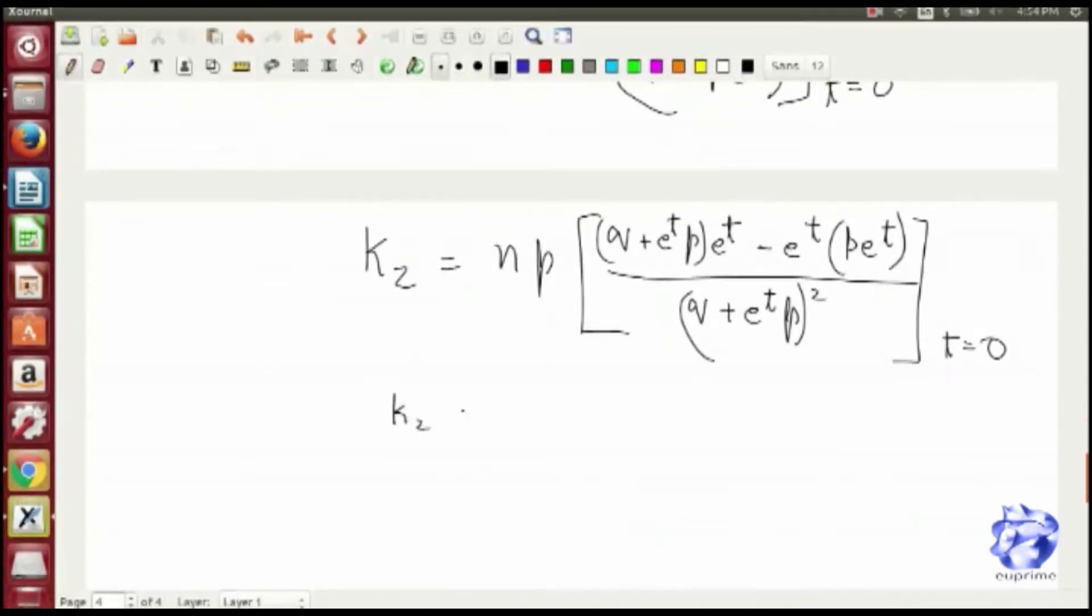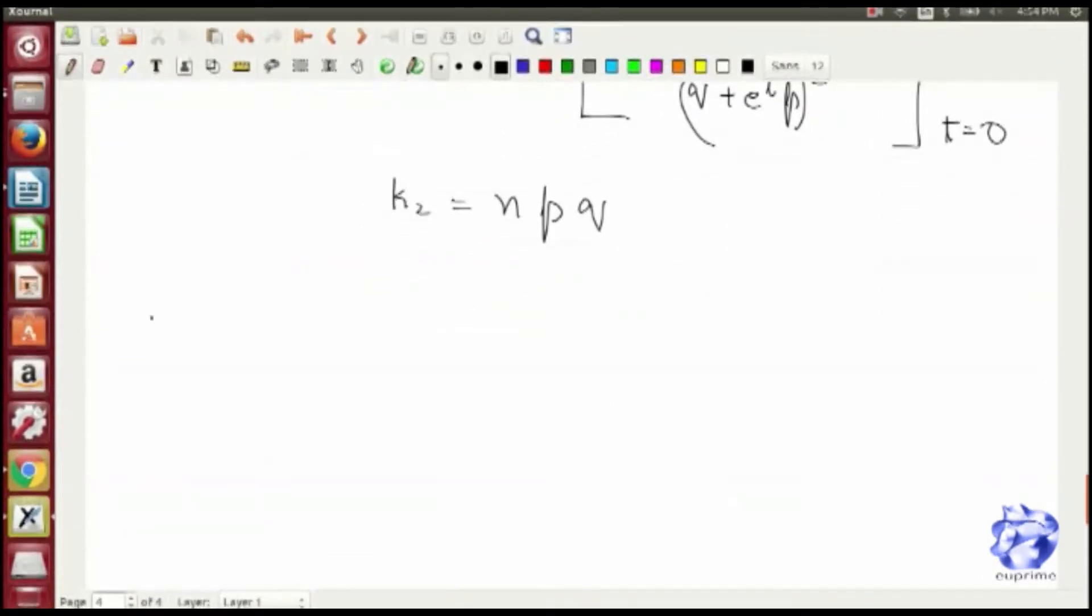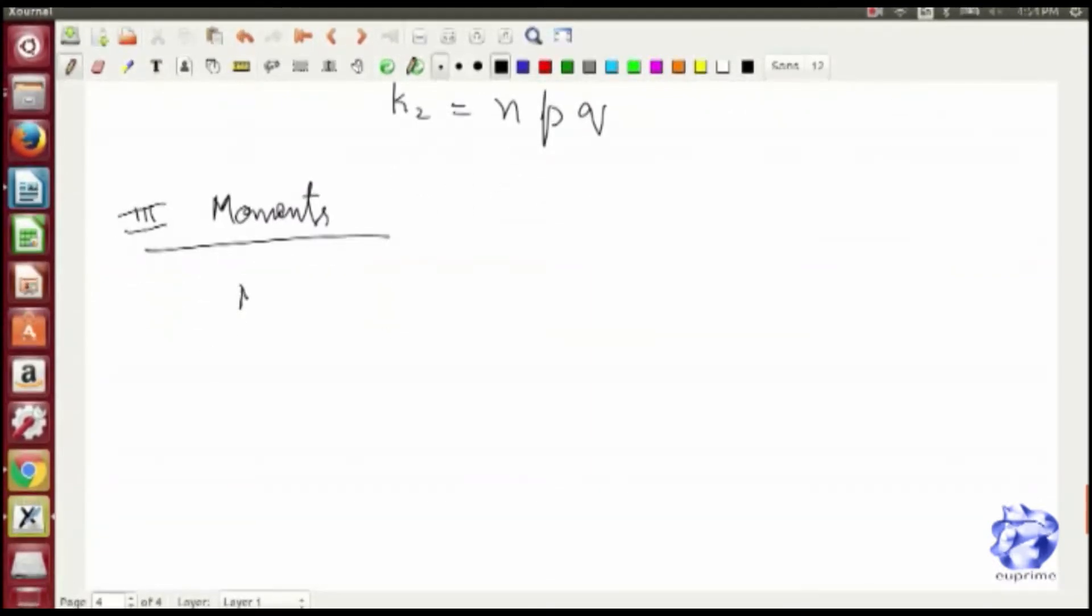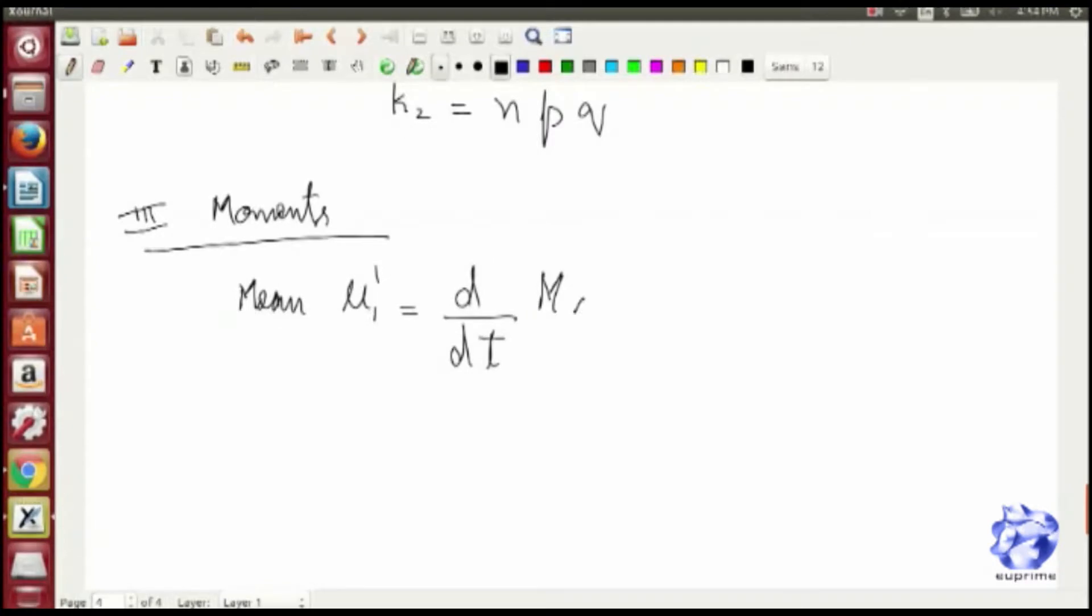So again the second moment evaluates out to be npq. Again you find the mean and variance through method of moments. Again, this time we don't take the log, just differentiate it once.